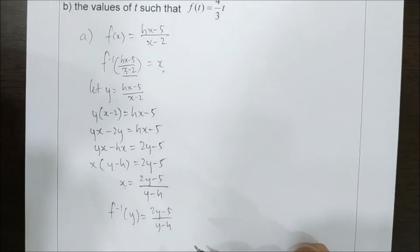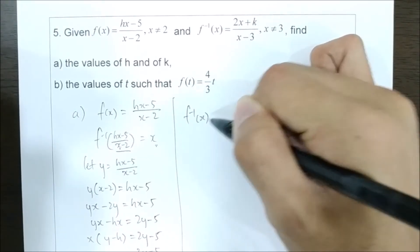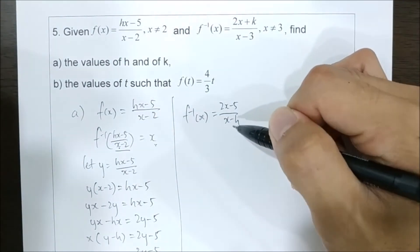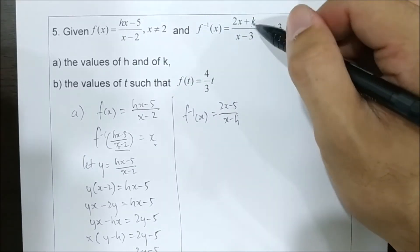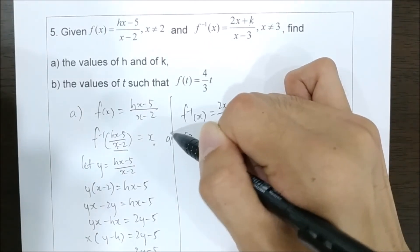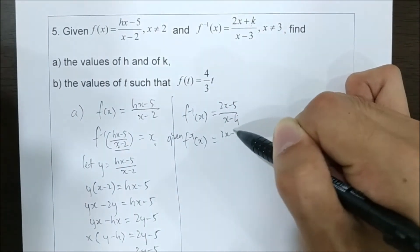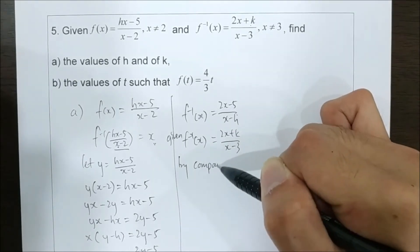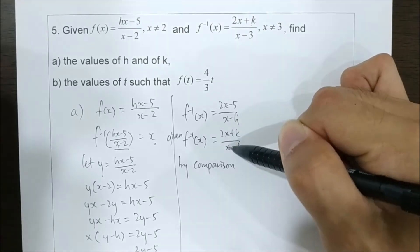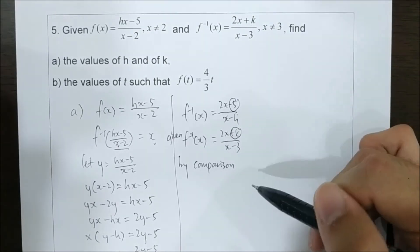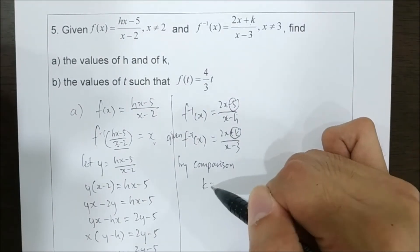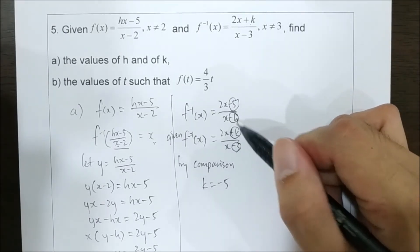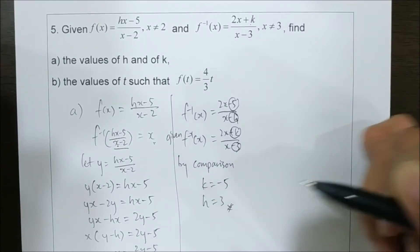Now we replace y with x: f inverse of x equals to 2x minus 5 over x minus h. We compare this with the given f inverse: f inverse of x equals to 2x plus k over x minus 3. By comparison, negative 5 equals plus k, so k equals negative 5. And negative h equals negative 3, meaning h equals 3.